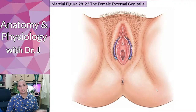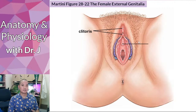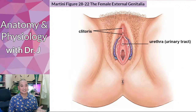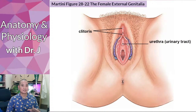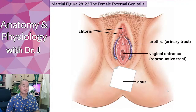Here is the inferior view of the female external genitalia. Anteriorly we have the clitoris, covered by the prepuce — a hood, just like the foreskin in the male. There are three separate orifices: the urethra is a separate opening from the vagina, which is a common misconception. Then we have the vagina and the anus.